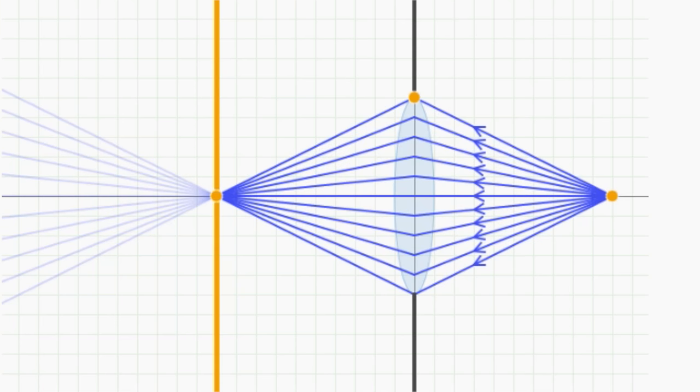But now, with a lens in there, only a slice of our scene will be in focus. And anything which moves outside of this in focus region, either too close or too far away, will appear out of focus.